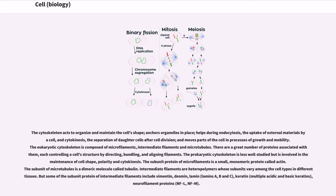The subunit protein of microfilaments is a small, monomeric protein called actin. The subunit of microtubules is a dimeric molecule called tubulin. Intermediate filaments are heteropolymers whose subunits vary among the cell types in different tissues. But some of the subunit proteins of intermediate filaments include vimentin, desmin, lamin, lamins A, B and C,